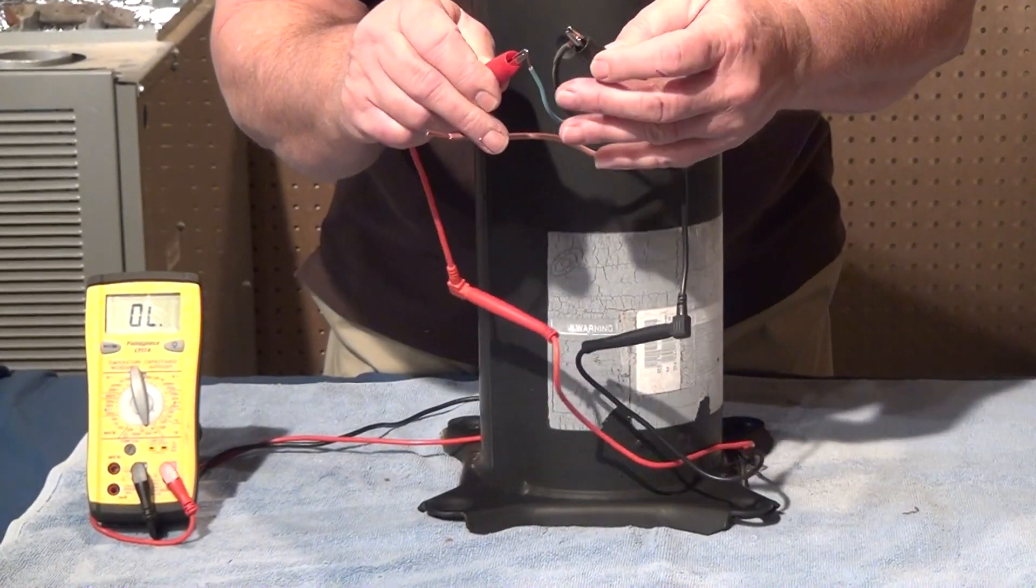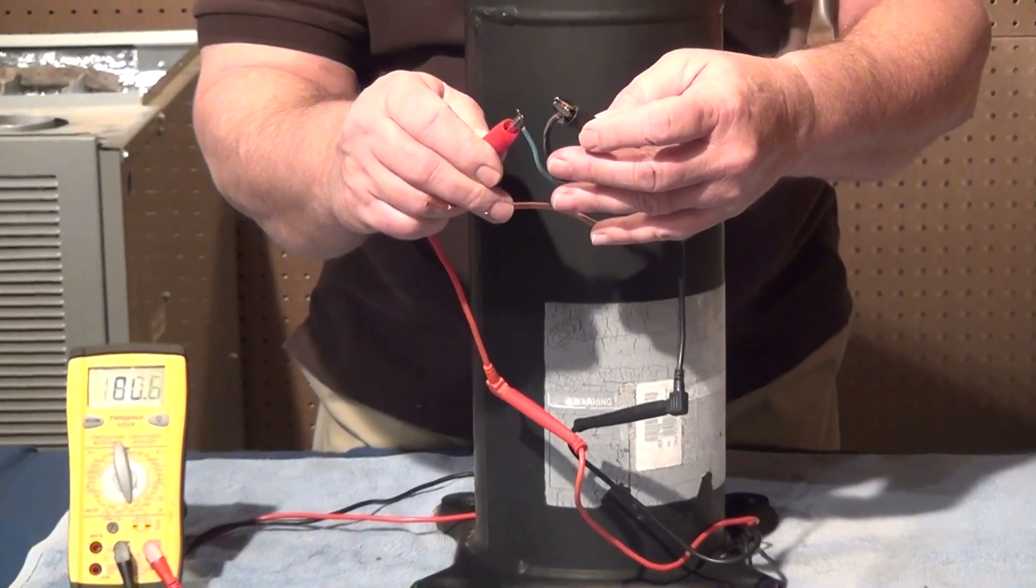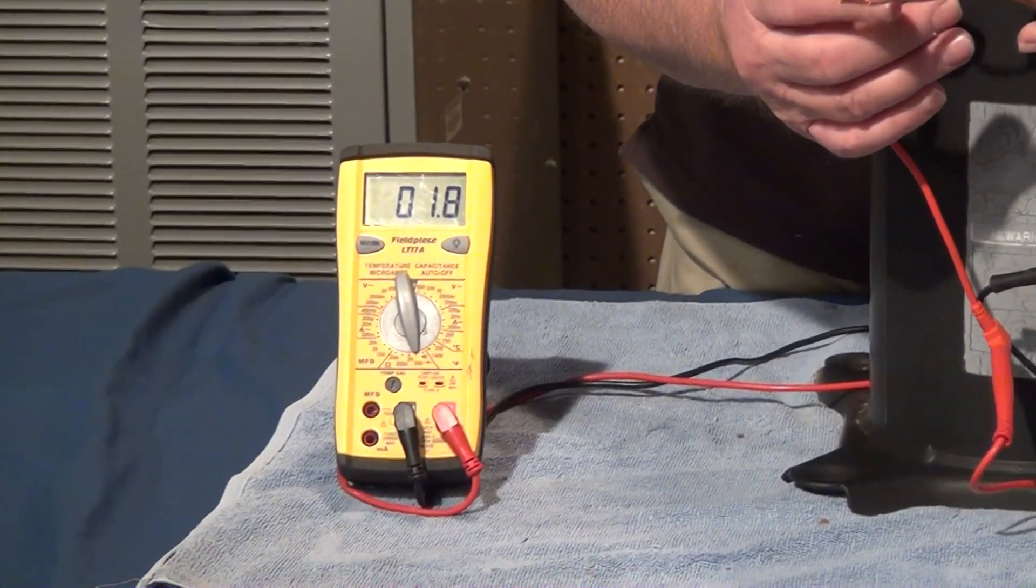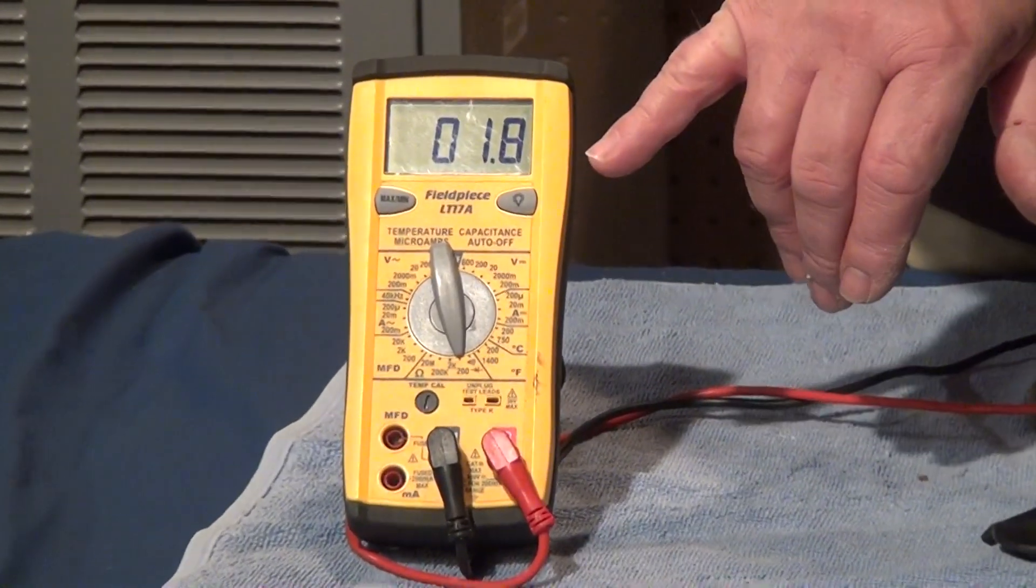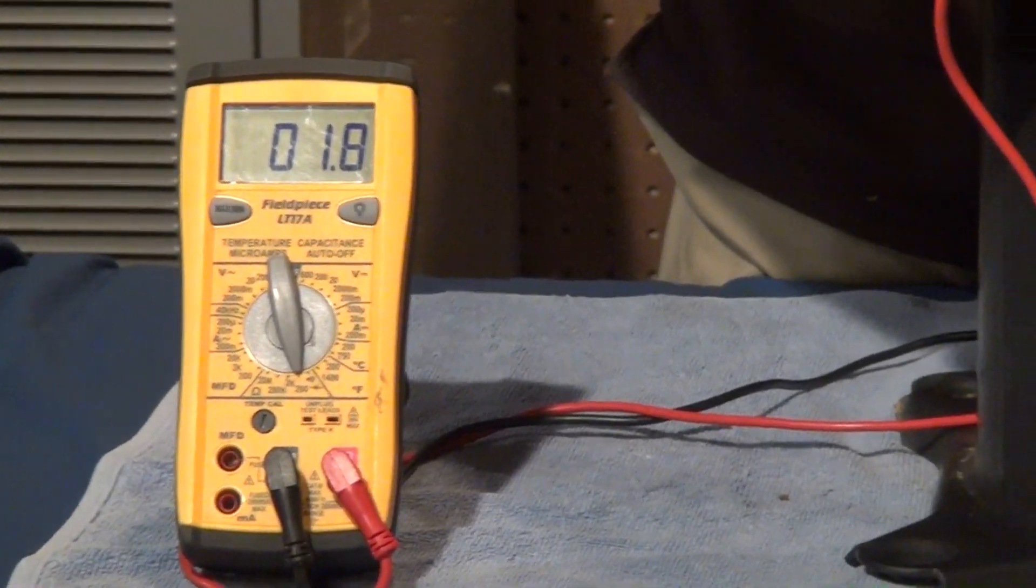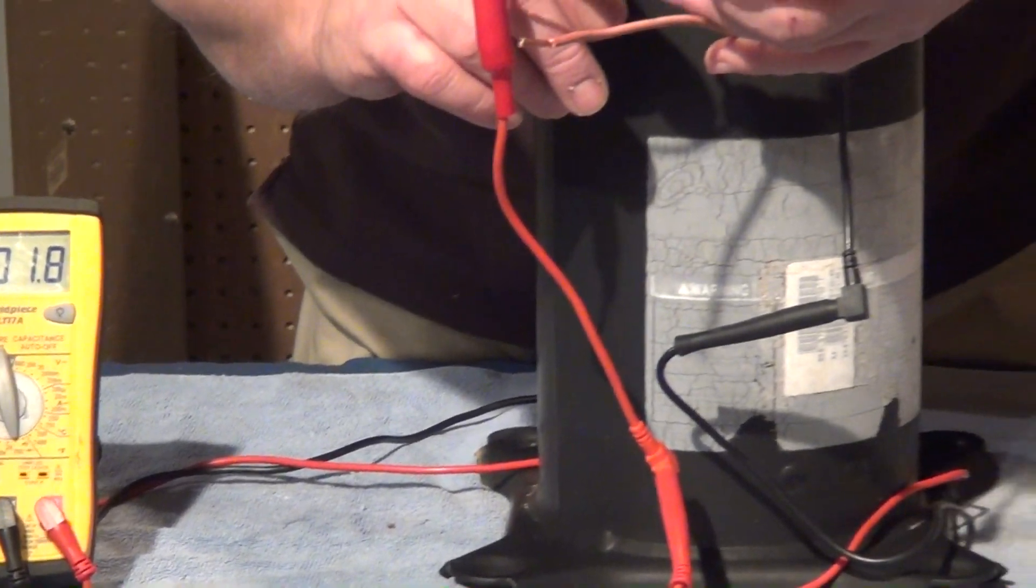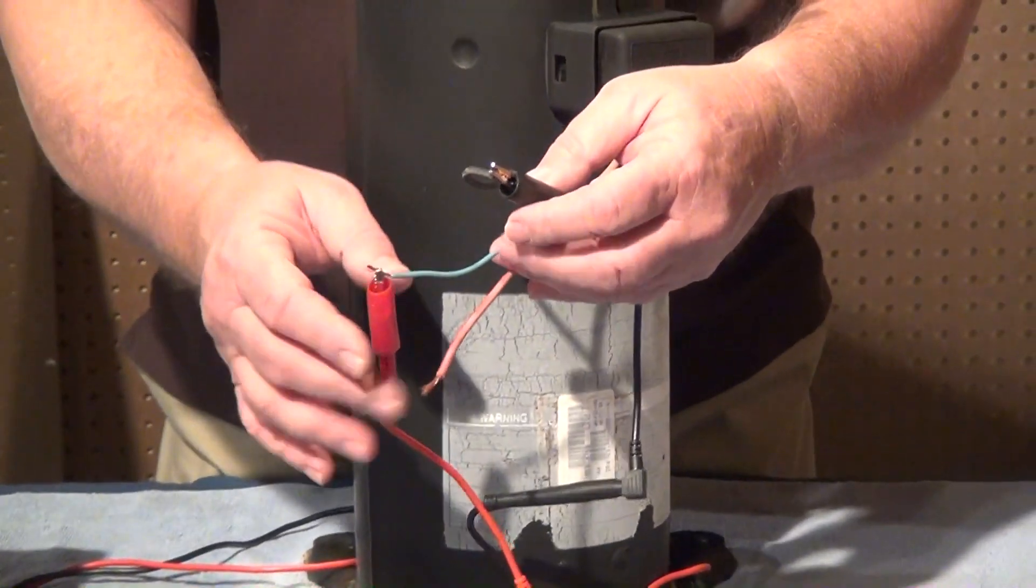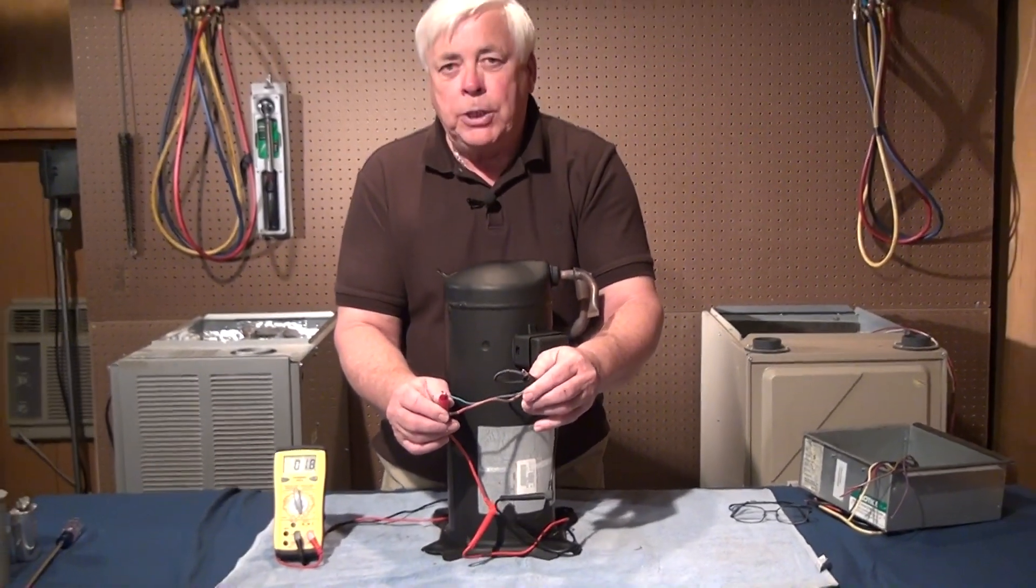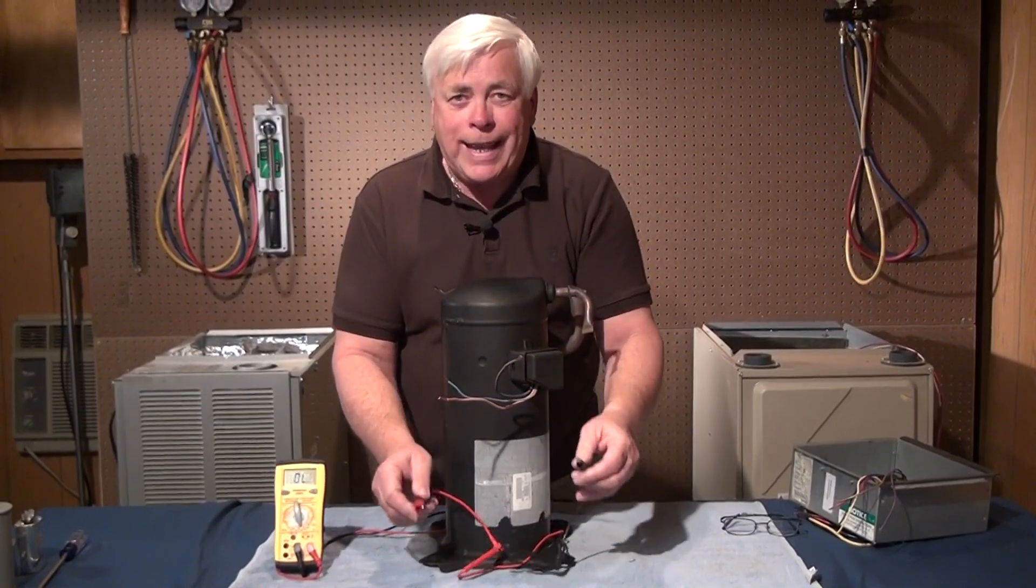When we move over to test this particular winding though, what you can see is we're going to have a different resistance reading. The resistance reading that we're going to get on our meter for this particular test is going to be just shy of two ohms resistance, which means we are in fact testing the start winding of the compressor. So the bottom line on testing the compressor is very simple. We've done the electrical tests and we know that the compressor is okay electrically.